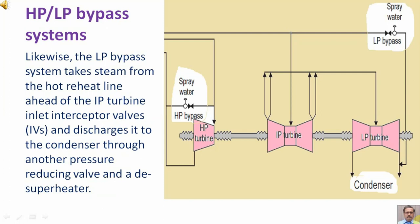Likewise, the LP bypass system takes steam from the hot reheat line ahead of the IP turbine inlet interceptor valve and discharges it to the condenser through another pressure reducing valve and a desuperheater.